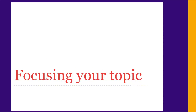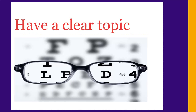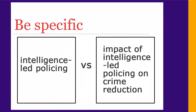Before you start searching, you need to have a good, focused topic. Make sure your topic is narrow and specific. If it's too broad, you'll find too many issues to summarize easily for your executive summary. For example, instead of searching for intelligence-led policing, think of focusing on one aspect or example of that topic, like its effects on crime reduction.